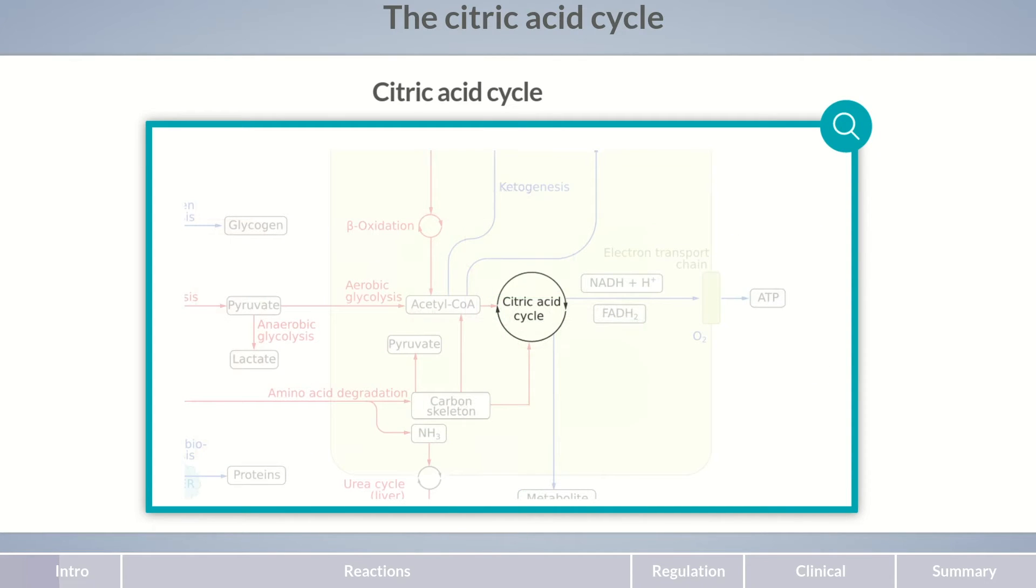In energy metabolism, the main function of the citric acid cycle is to generate reducing equivalents that can be converted to ATP in the electron transport chain.